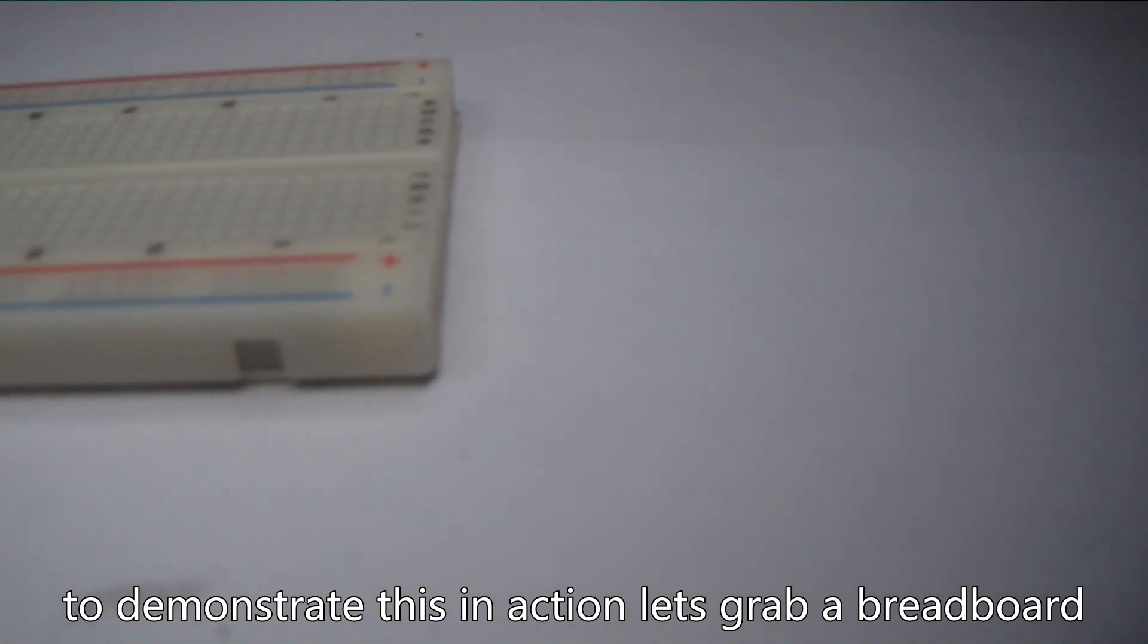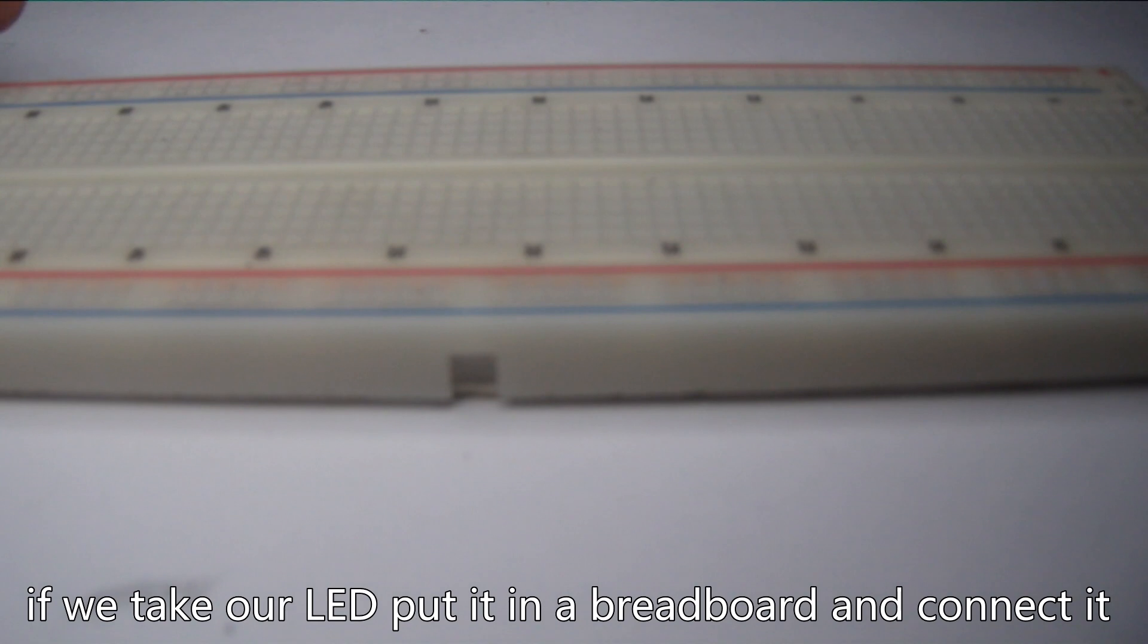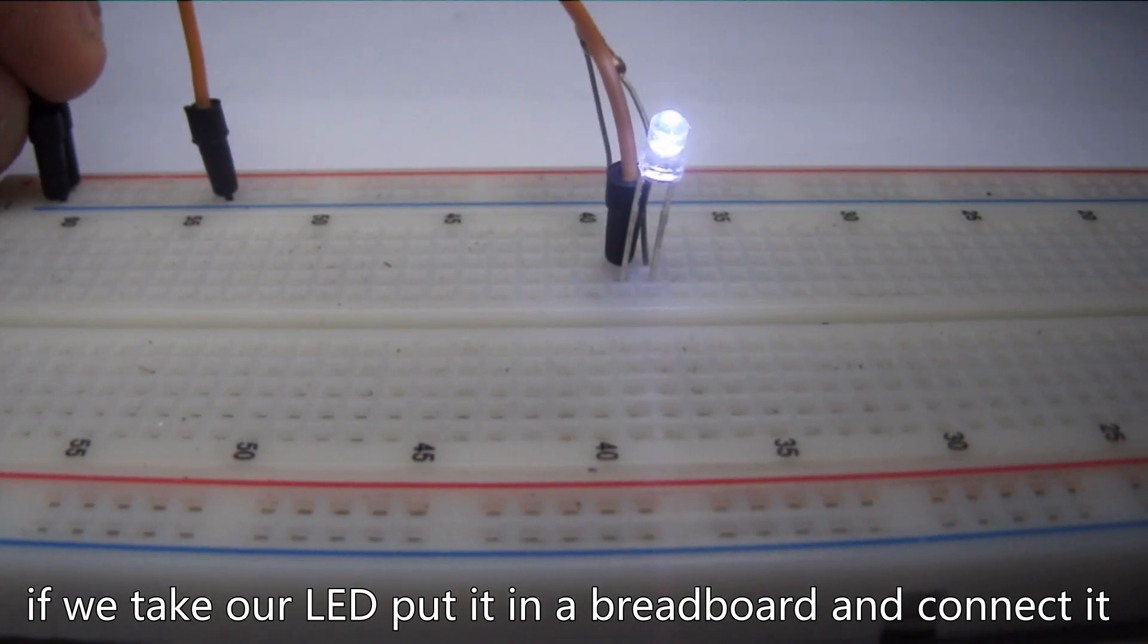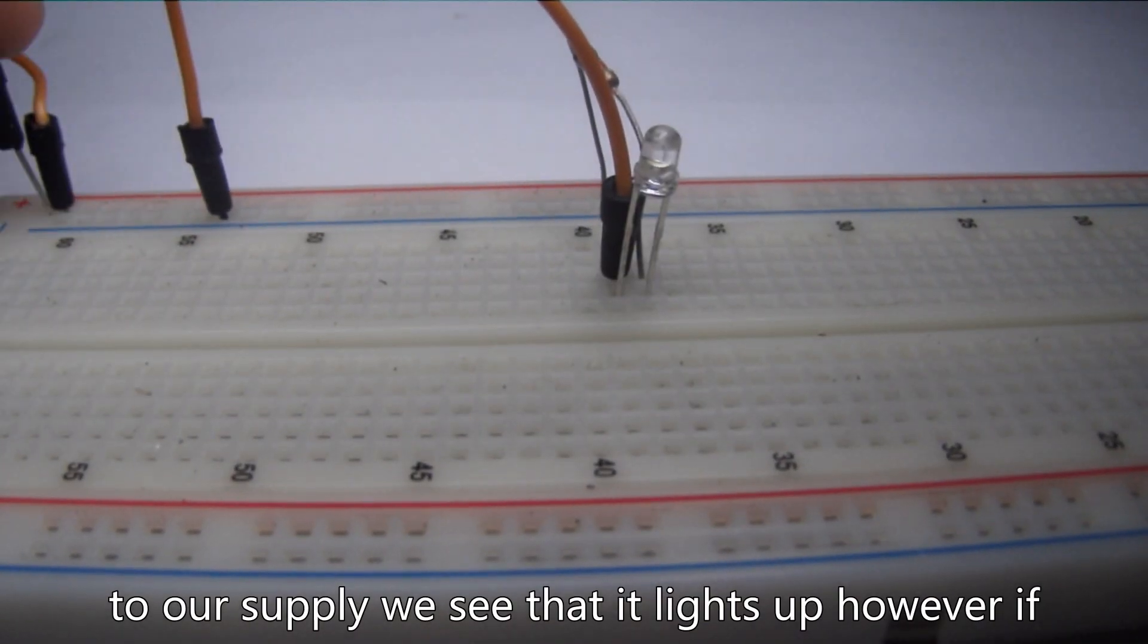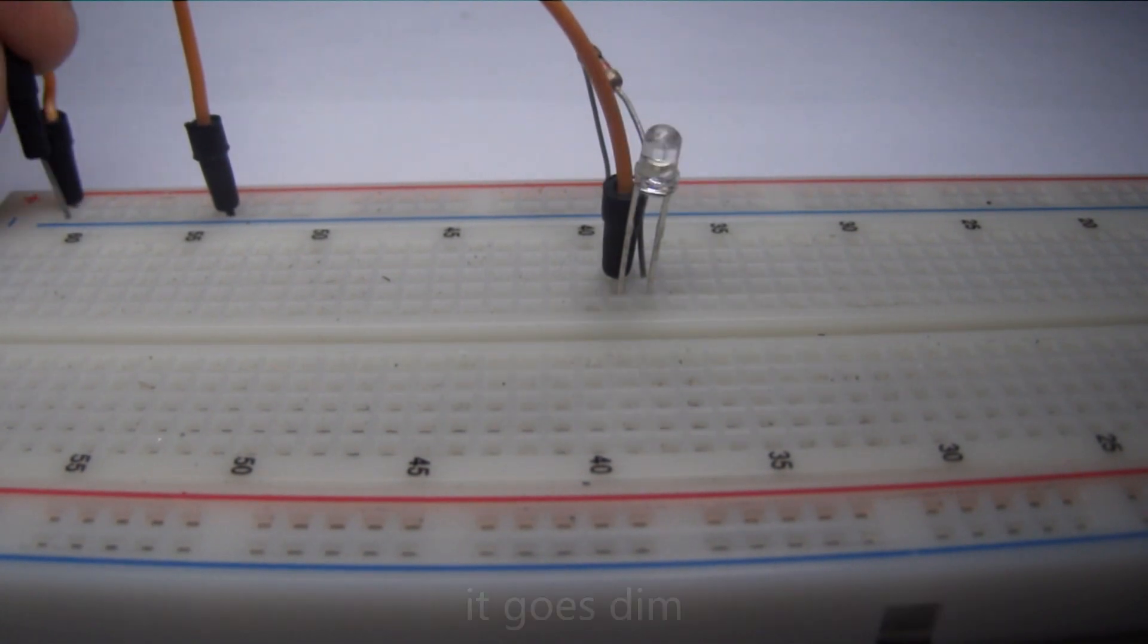To demonstrate this in action, let's grab a breadboard and test it out. If we take our LED, put it in our breadboard and connect it to a supply, we see that it lights up. However, if we disconnect the LED from the supply voltage, it goes dim.